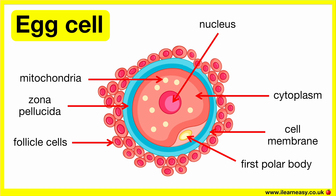The cell membrane changes after fertilisation by a single sperm, so that no more sperm can enter. The mitochondria provides the energy needed for cell processes, including fertilisation and early development. The zona pellucida in the egg cell protects the egg, facilitates sperm binding during fertilisation, and blocks the entry of multiple sperm.